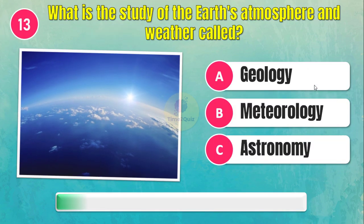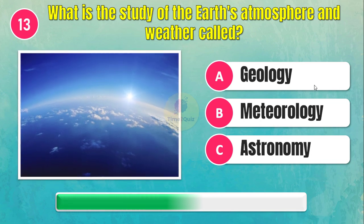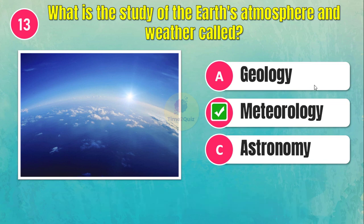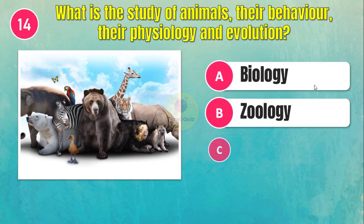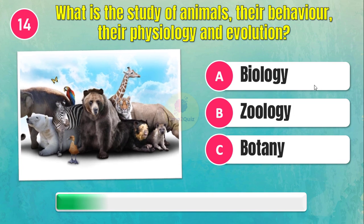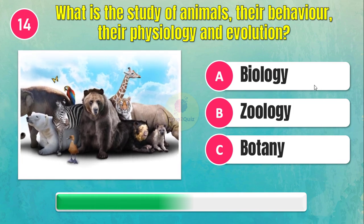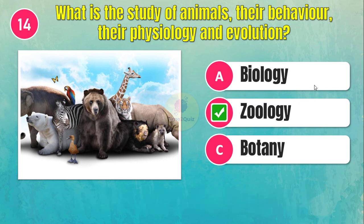What is the study of the Earth's atmosphere and weather called? Meteorology. What is the study of animals — their behavior, their physiology, and evolution? Zoology.